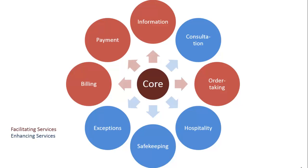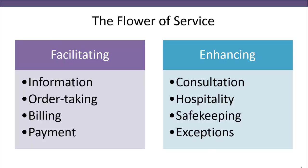For example, a food court may not have consultation services. To sum up the flower of service, the facilitating elements include information, order taking, billing and payment, while the enhancing services include consultation, hospitality, safekeeping and exceptions. In the next few slides, I will provide examples of each of these kinds of services.